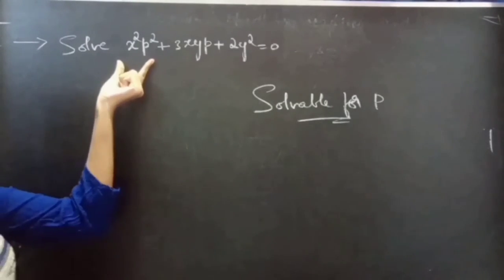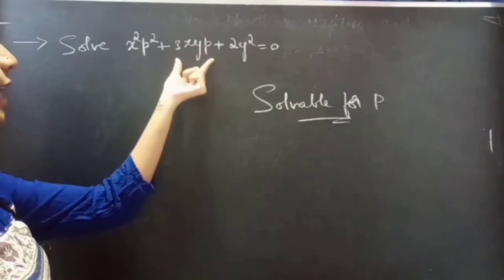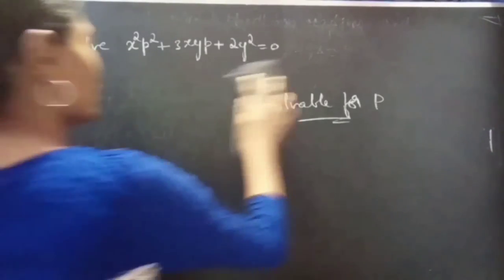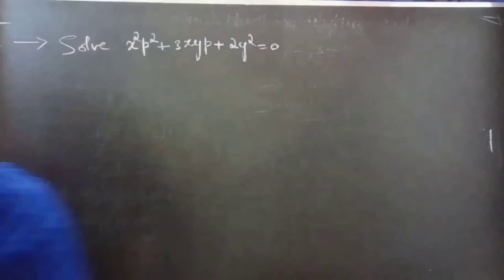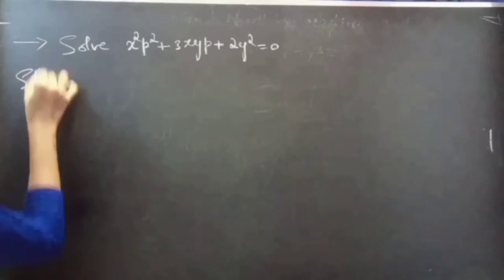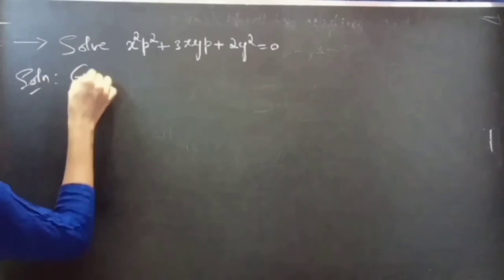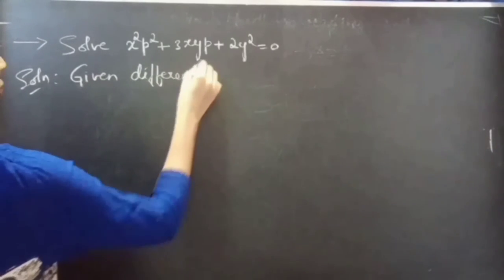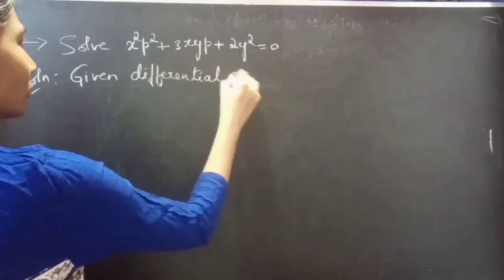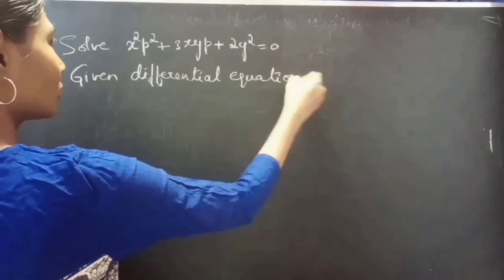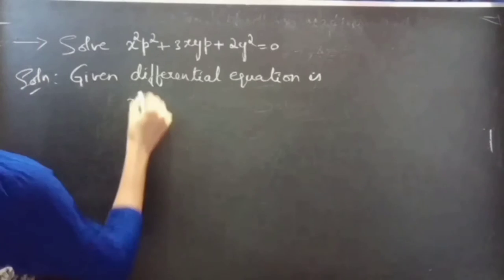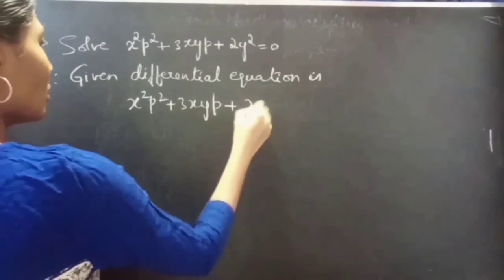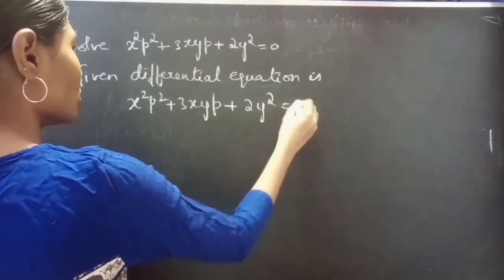Problem: solve x squared p squared plus 3xyp plus 2y squared equals 0. So we are given a differential equation. Solution: the given differential equation is x squared p squared plus 3xyp plus 2y squared equals 0.